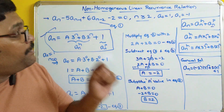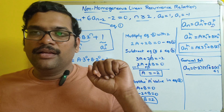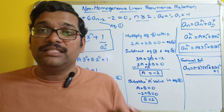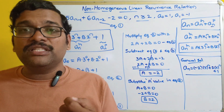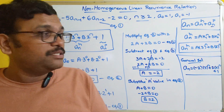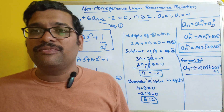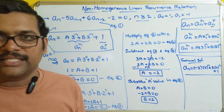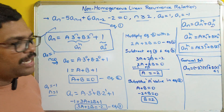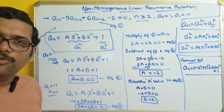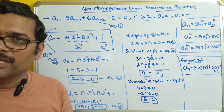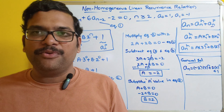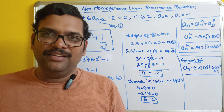Hope you understood this problem, where the function was a constant. In our next session, we'll see one more example where the function is a multiple of n, and the procedure for the particular solution will be different. If you have any doubts, feel free to post them in the comment section. If you enjoyed the session, like, share with your friends, and don't forget to subscribe to our channel. Thanks for watching.